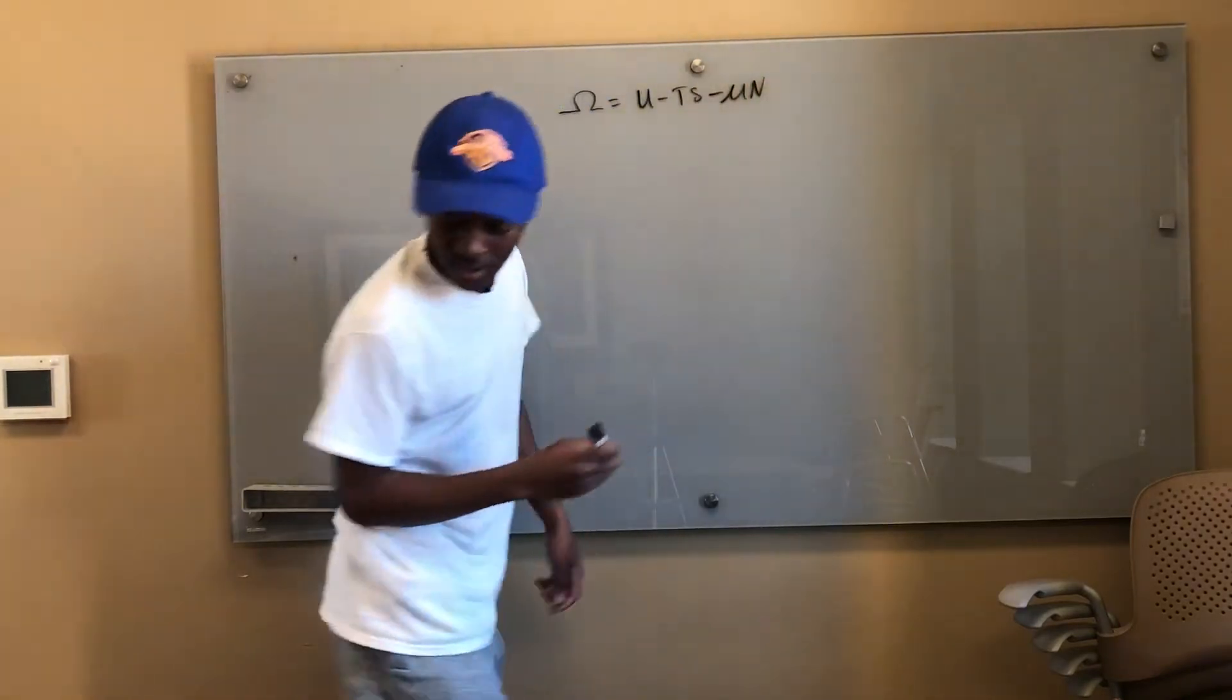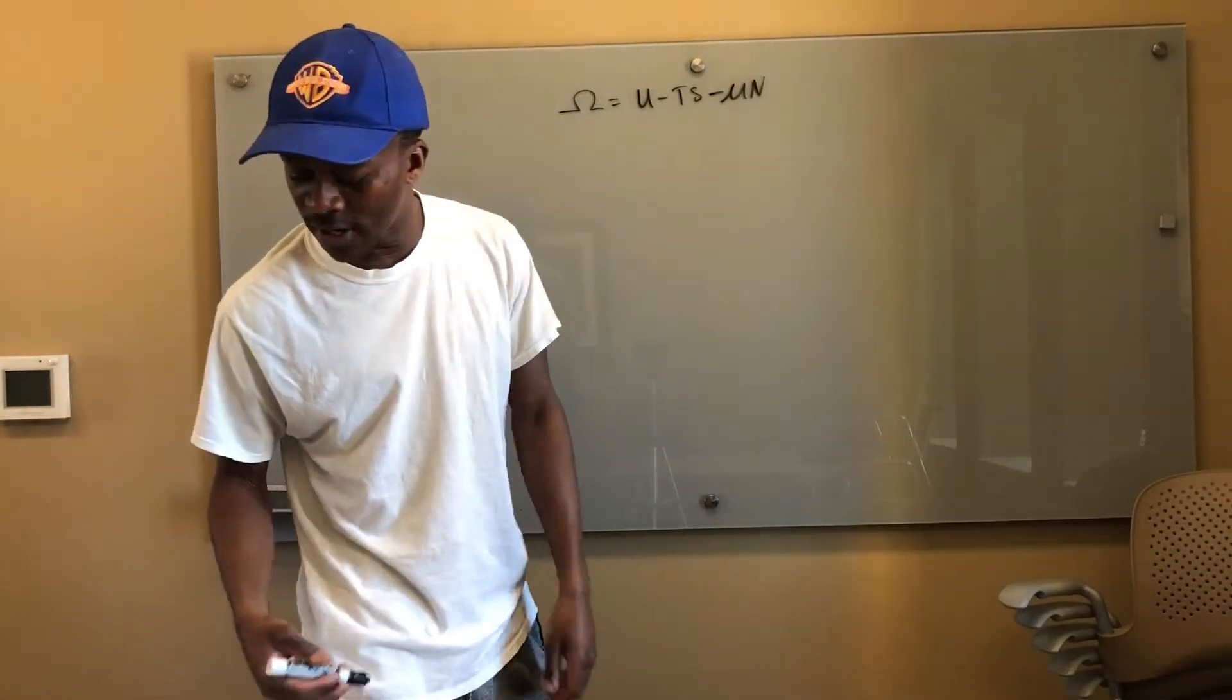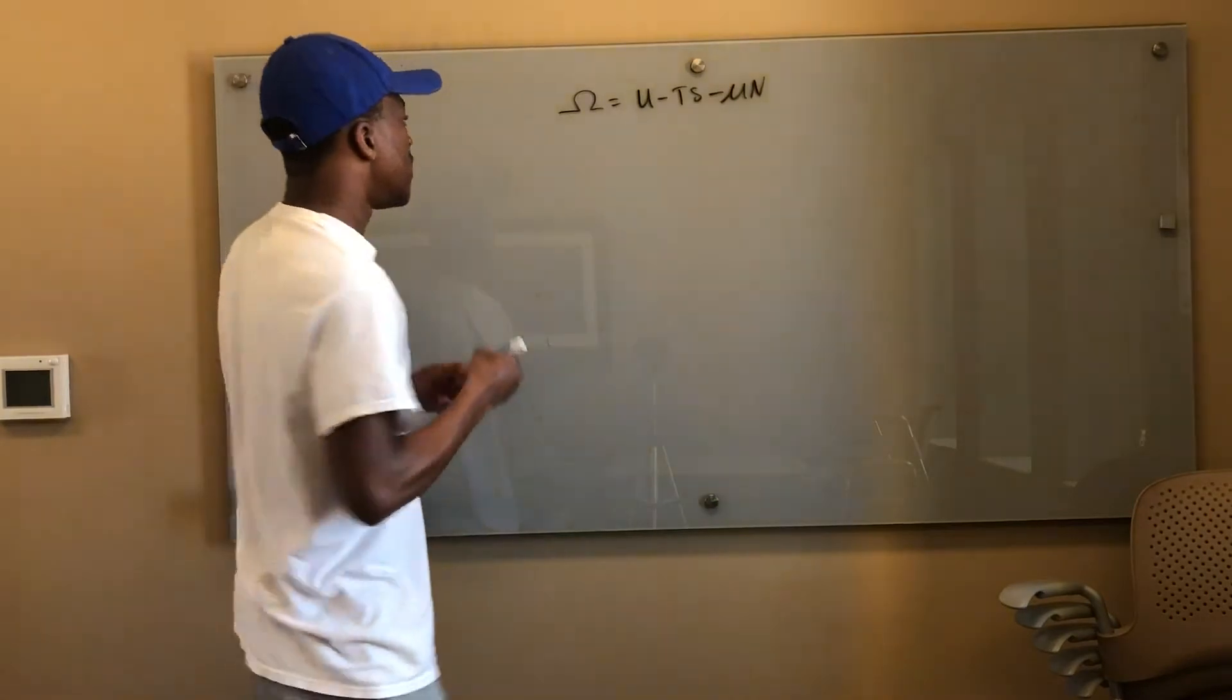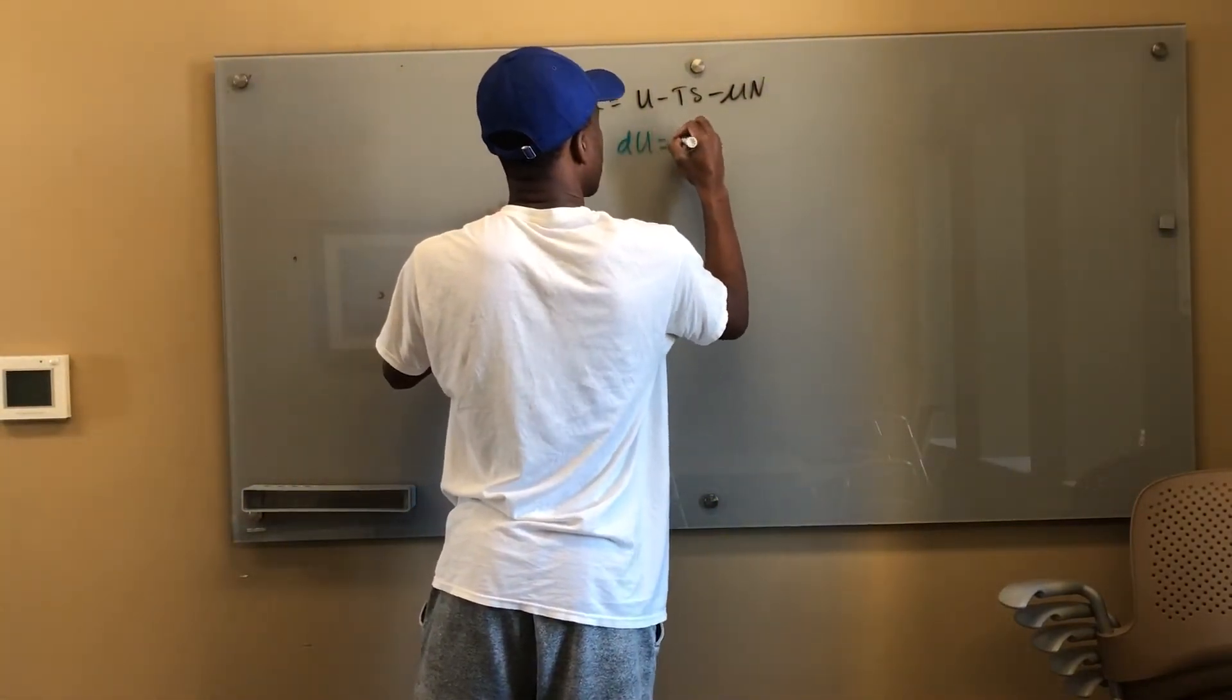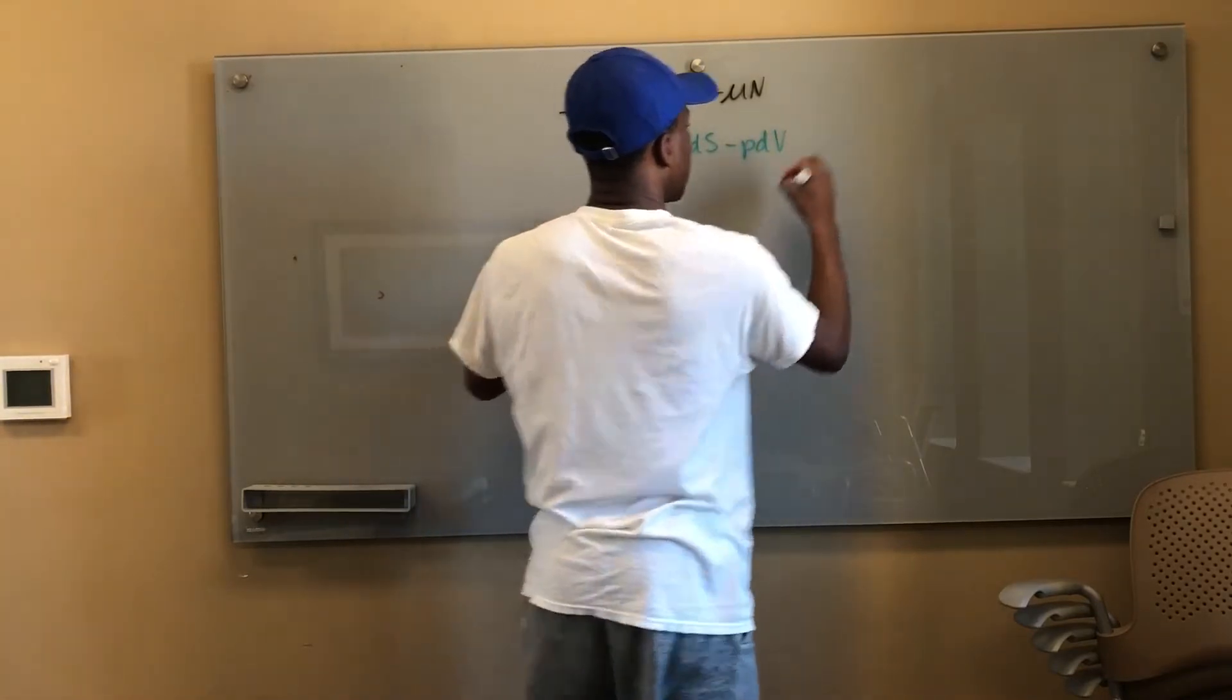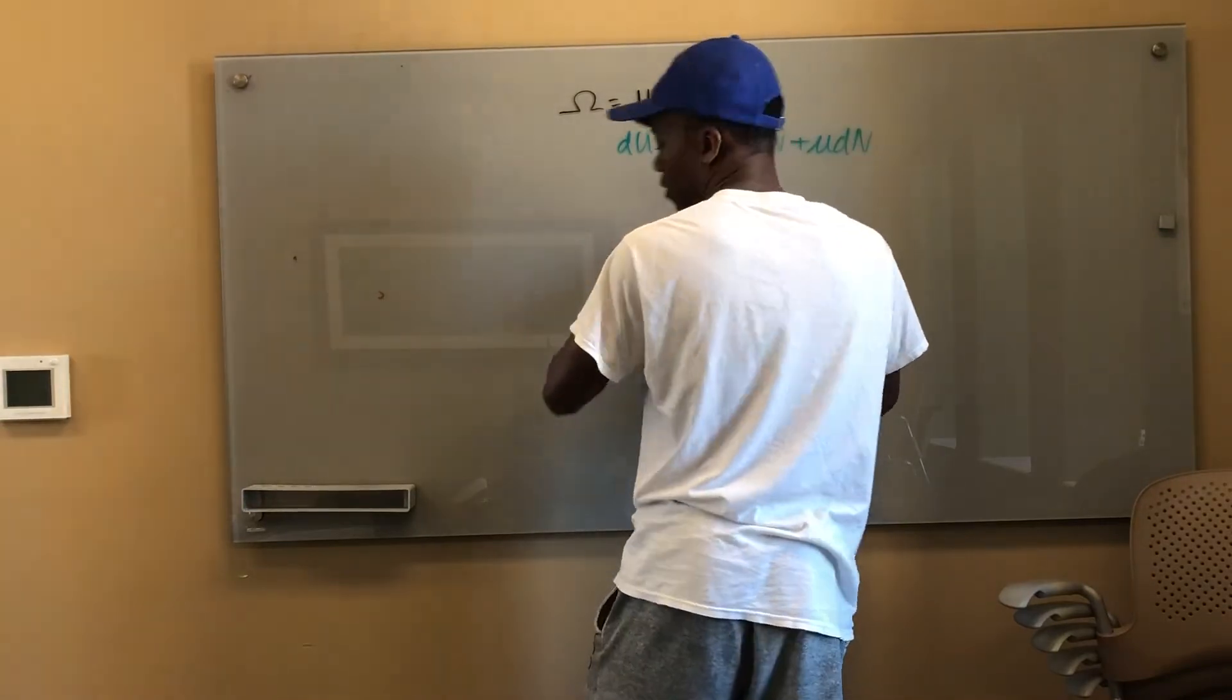So we know what we have to do already. We start off with our basic combined first and second law: dU equals TdS minus PdV plus μdN, okay. And I should actually write that, I'm gonna write it just saying a one component system.